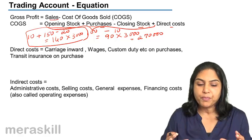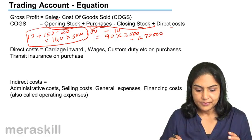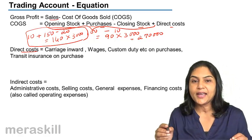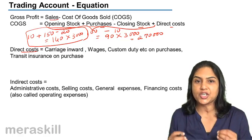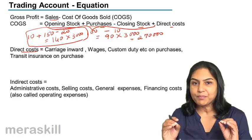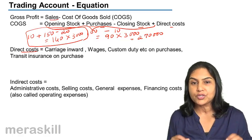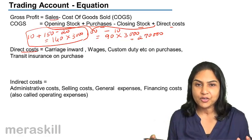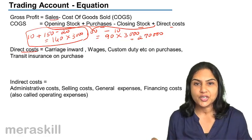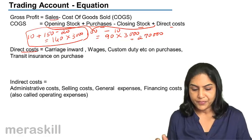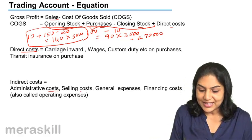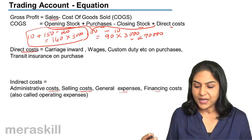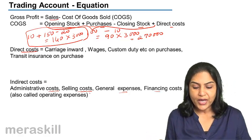Besides these costs, there could be other indirect costs. Direct costs are those directly concerned with the purchase cost of goods meant for sale. Indirect costs include salaries paid to the manager, rent of the premises, lighting, telephone charges, cashier's salaries, and so on. Indirect costs are the administrative costs, selling costs, general expenses, and financing costs — for example, interest paid on a loan. These indirect costs are also known as operating costs.